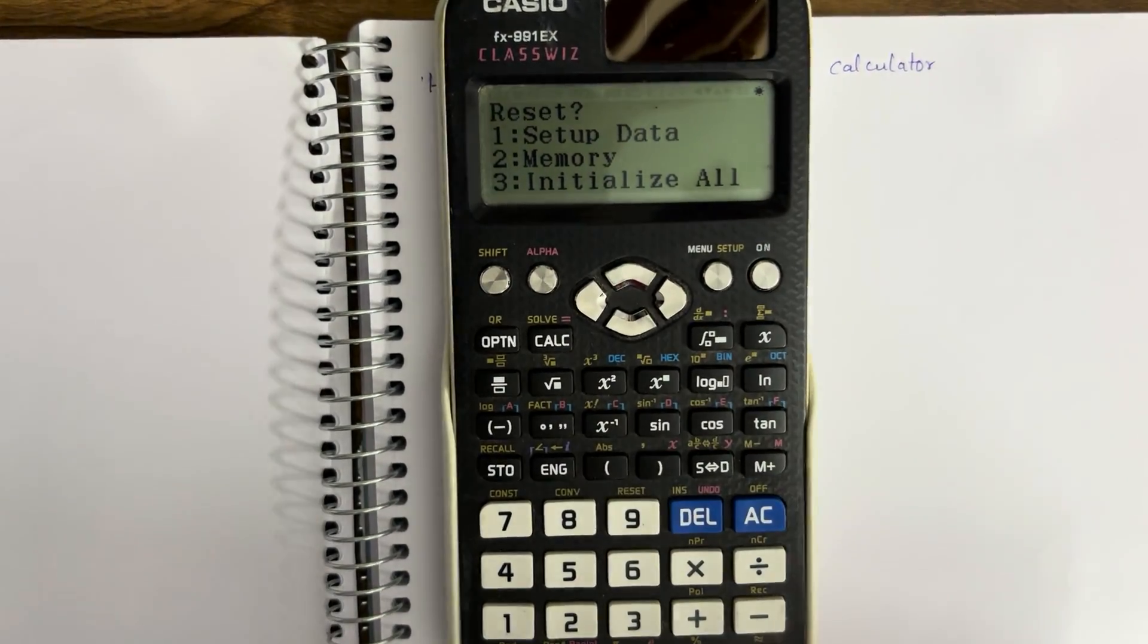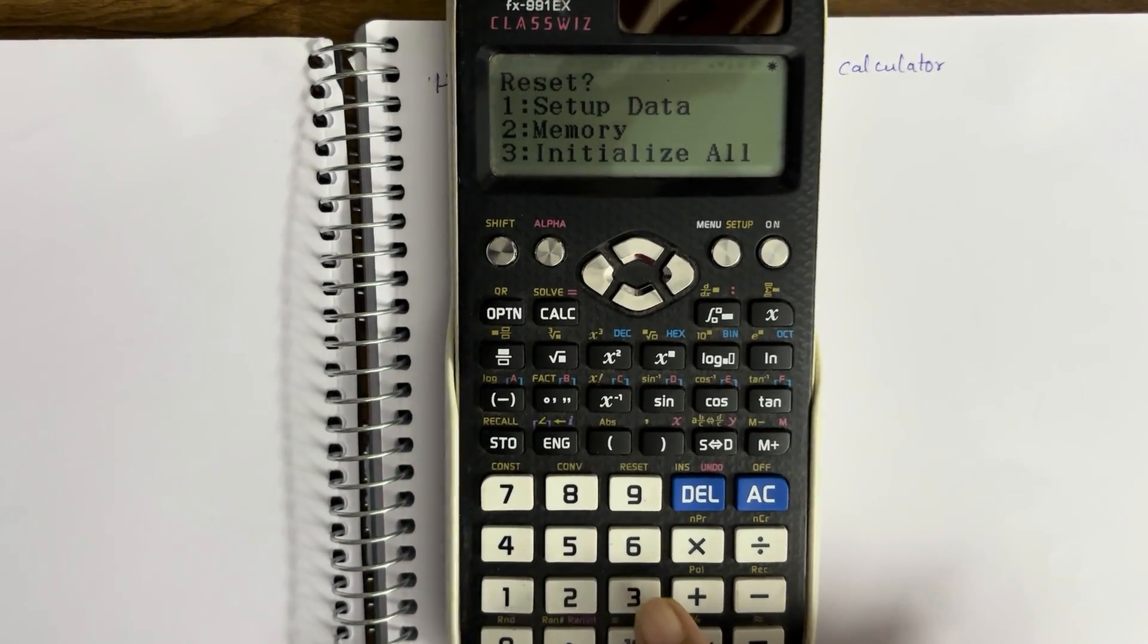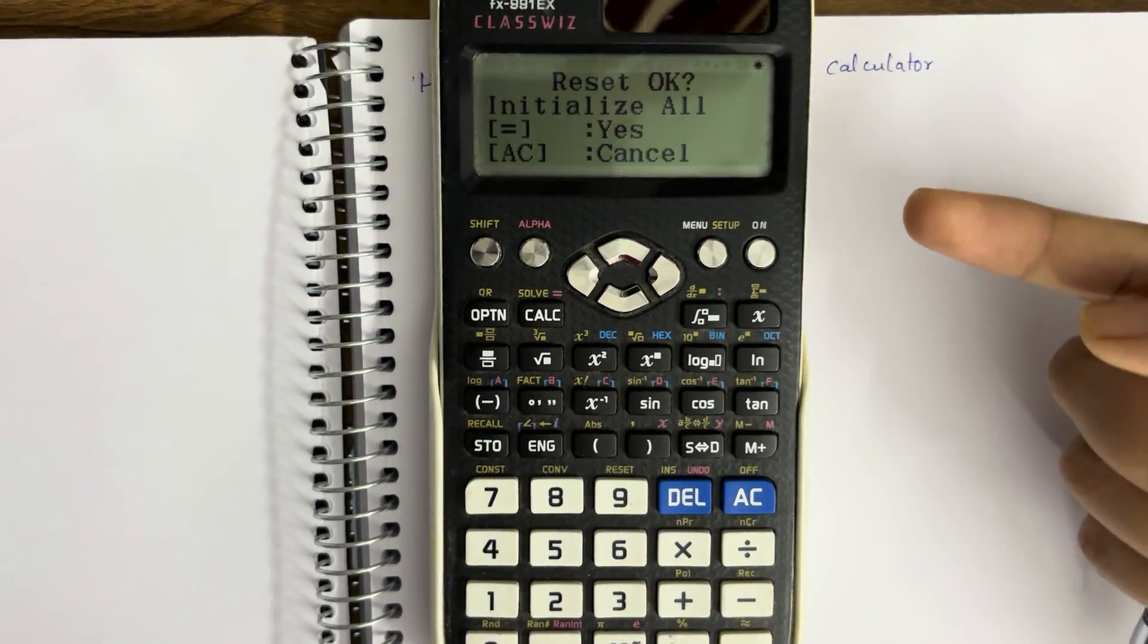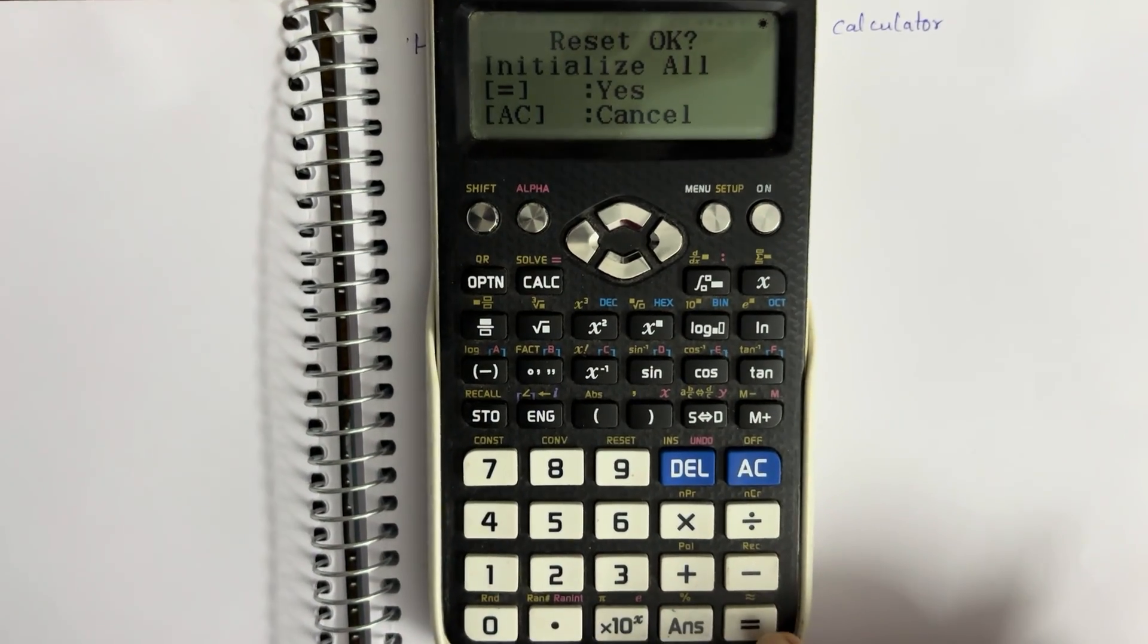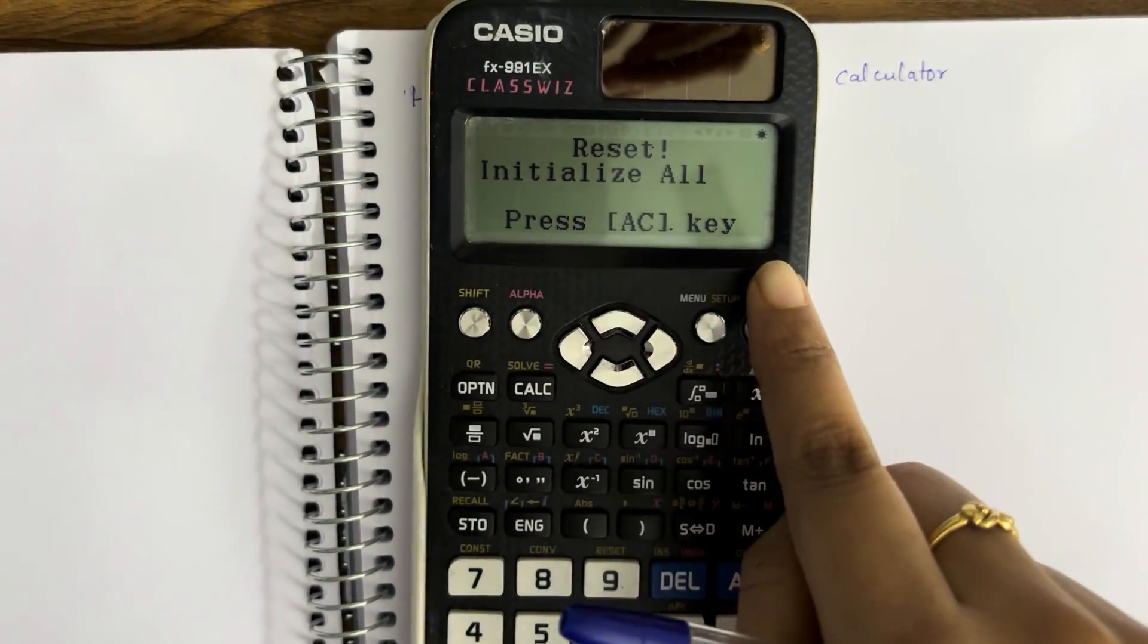We're going to reset it entirely, so we'll press three. Next, it asks if you want to go ahead with it or cancel. Press equals to go ahead. Then it says reset, initialize all, press AC.